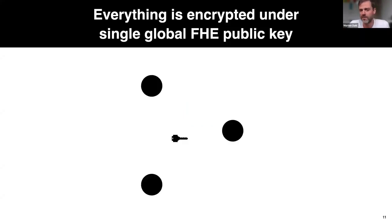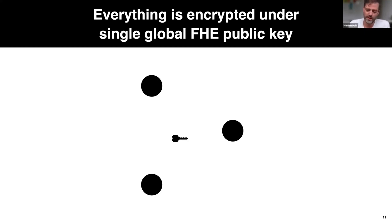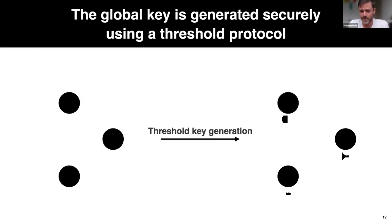The general setup is that everything on an FHE chain is encrypted under the same global FHE public key. The validators hold secret shares of this key — generated via threshold key generation — so that no single validator can learn anything on their own. To use the key, they participate in a threshold protocol. When users want to provide input to the blockchain, they encrypt their data under this public key and provide a proof that the encryption was done correctly, then send it to the validators.